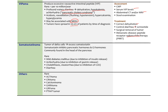The somatostatinoma is a tumor of delta cells secreting excess somatostatin, which inhibits all pancreatic hormones — causing diabetes, achlorhydria, gallstones (from inhibition of CCK, which normally stimulates bile flow and gallbladder contractions), and diarrhea. Other very rare PanNETs include ACTHomas, CRHomas, growth hormone-producing tumors, and PTHrP-secreting tumors (which mimic parathyroid hormone and increase serum calcium). These all require workup for their specific hormones. This completes the section on pancreatic disorders; insulin disorders are covered in the separate diabetes section.